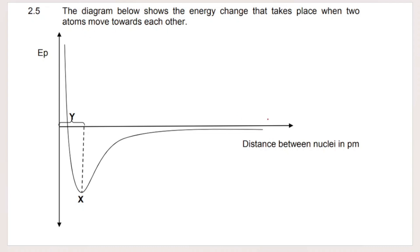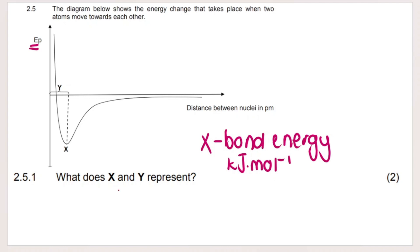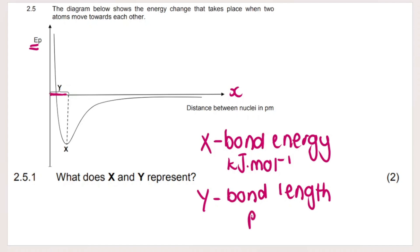Here's another graph showing energy change as two atoms move toward each other. When atoms are far apart they're on the left; as they move closer, energy drops to an optimal point forming a stable molecule. The quantity X represents bond energy (typically in kilojoules per mole), and Y — measured along the x-axis — represents bond length, measured in picometers.